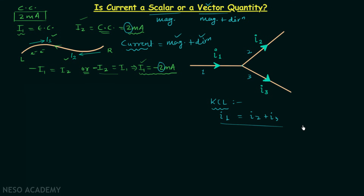This result is according to scalar theory — two outgoing currents when added give us the one incoming current. From here we get the idea that current is not a vector but a scalar.